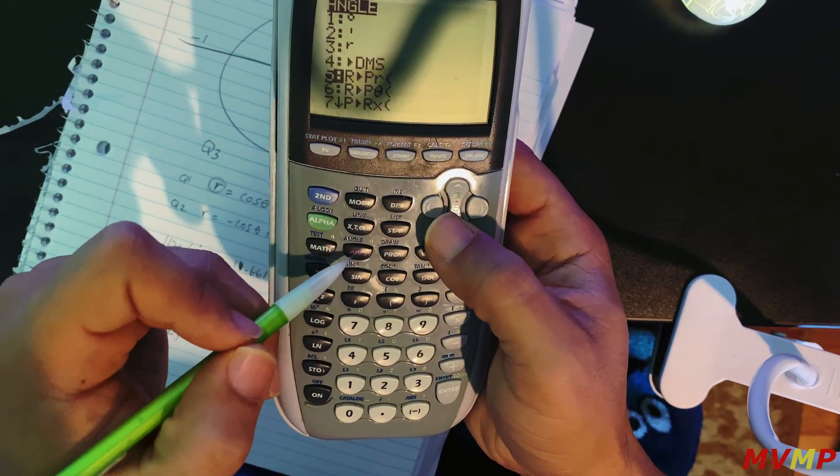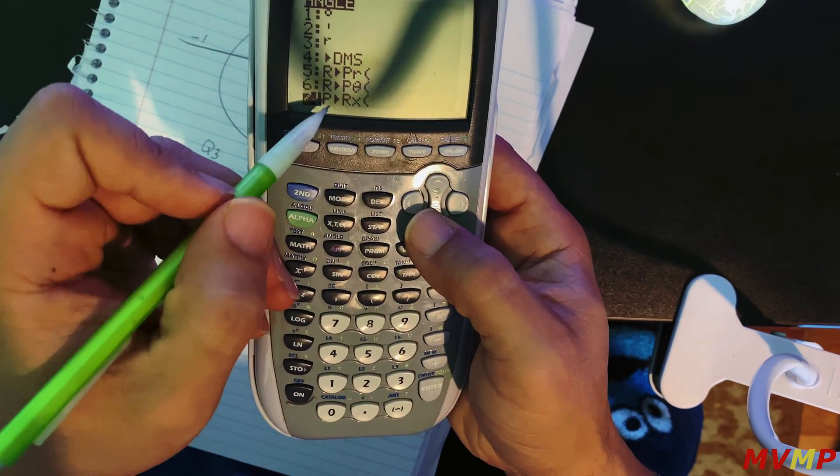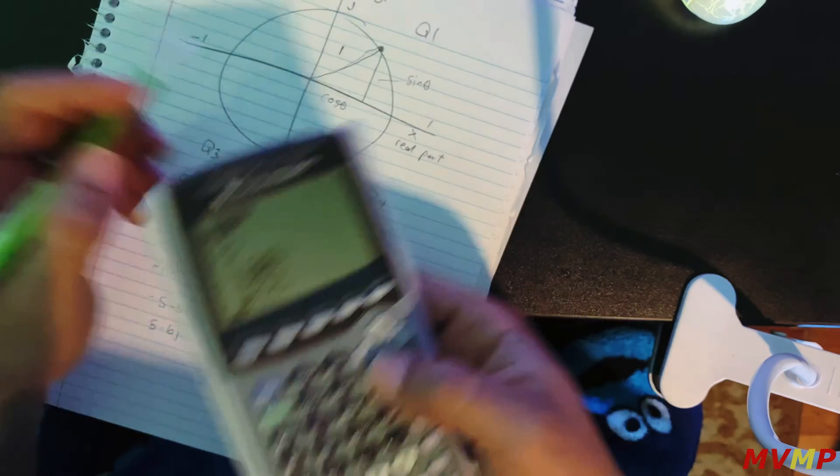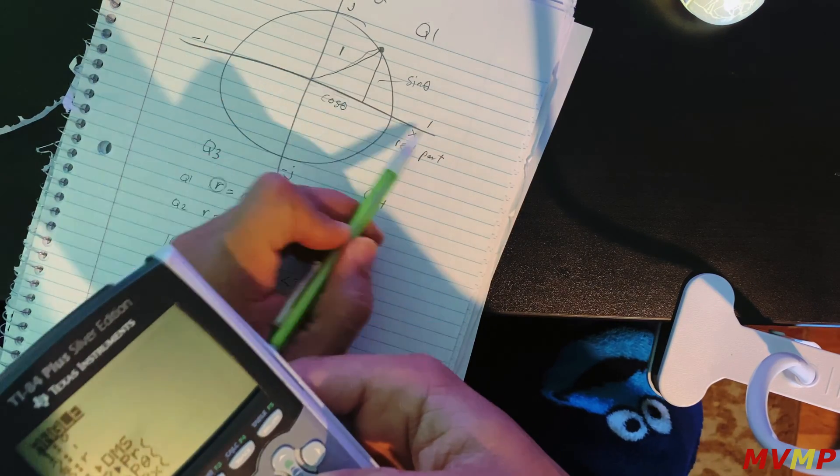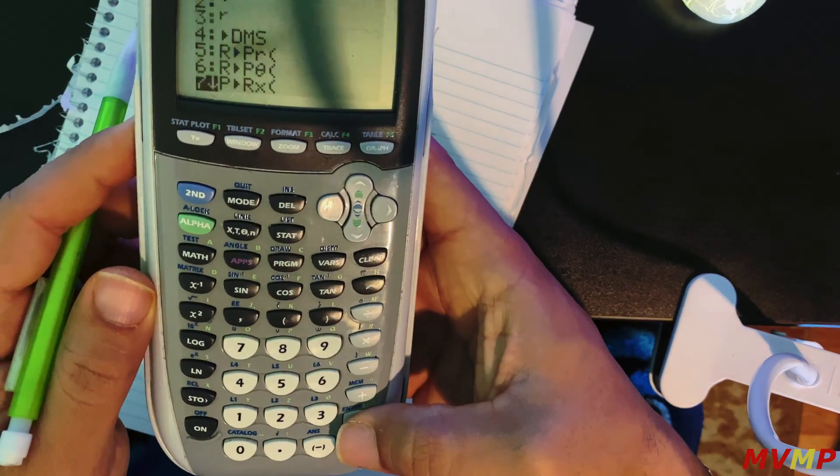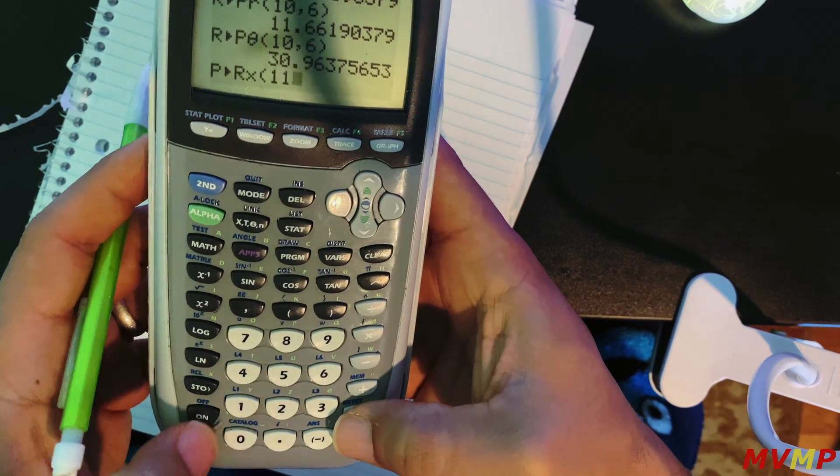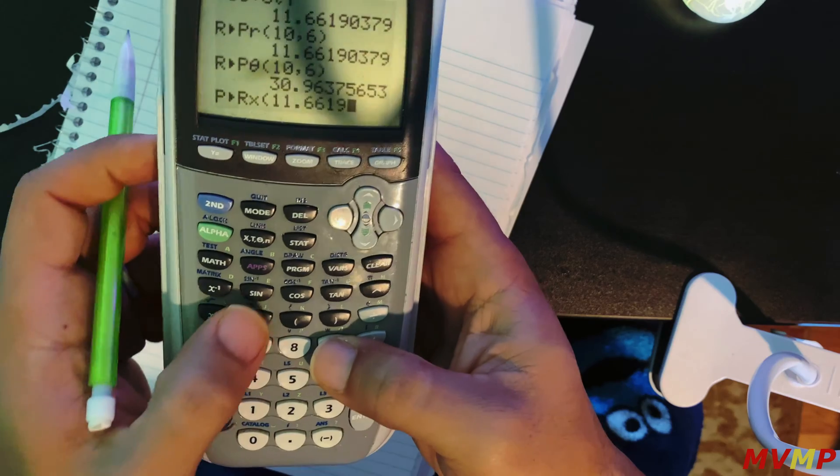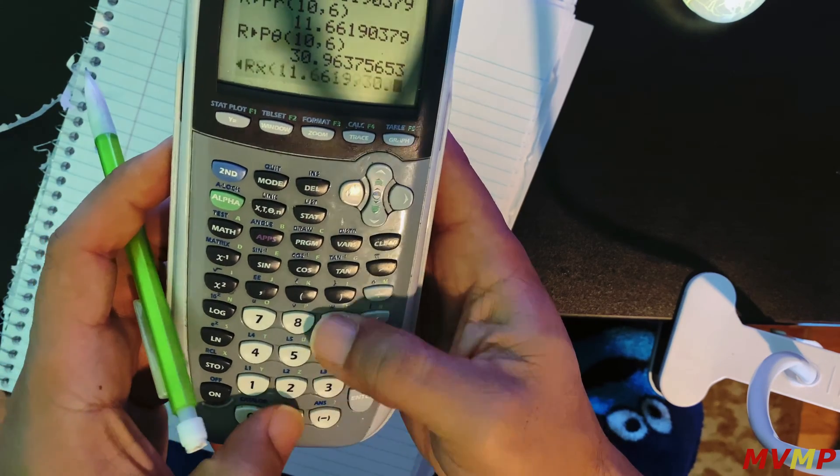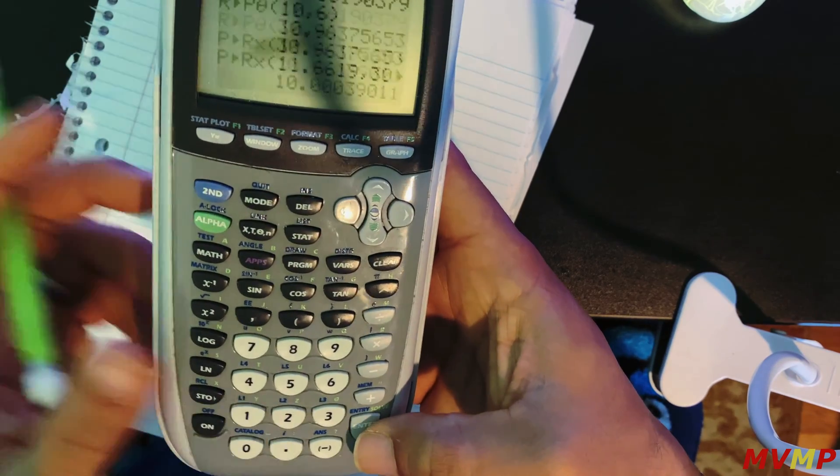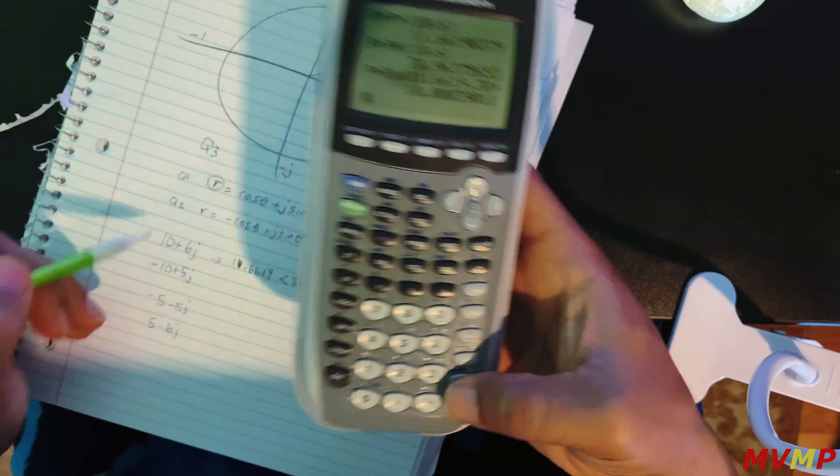You will click second apps. And now you're going for polar to rectangular. You're finding the x, the real part. And you will type in those numbers that you got above. 11.6619 comma 30.96. As you can see you get your 10 back.